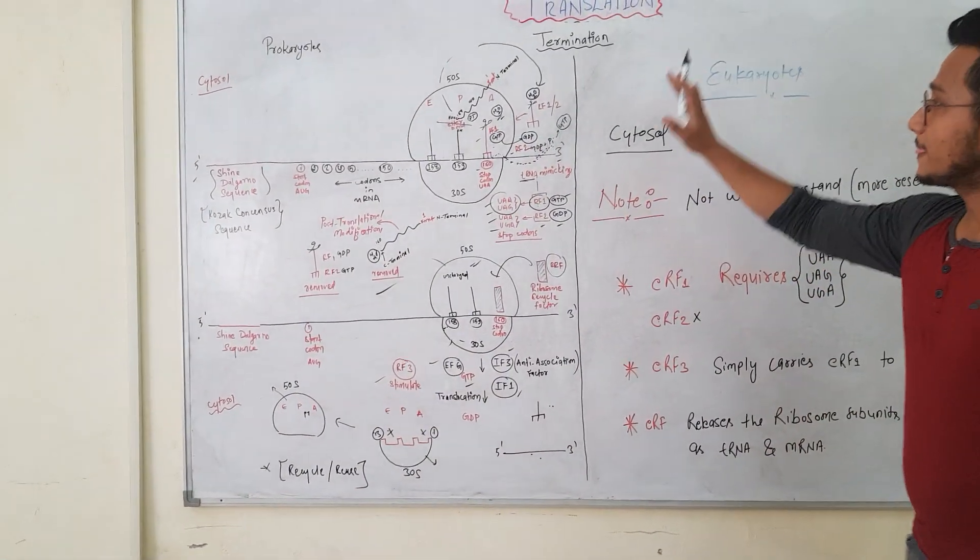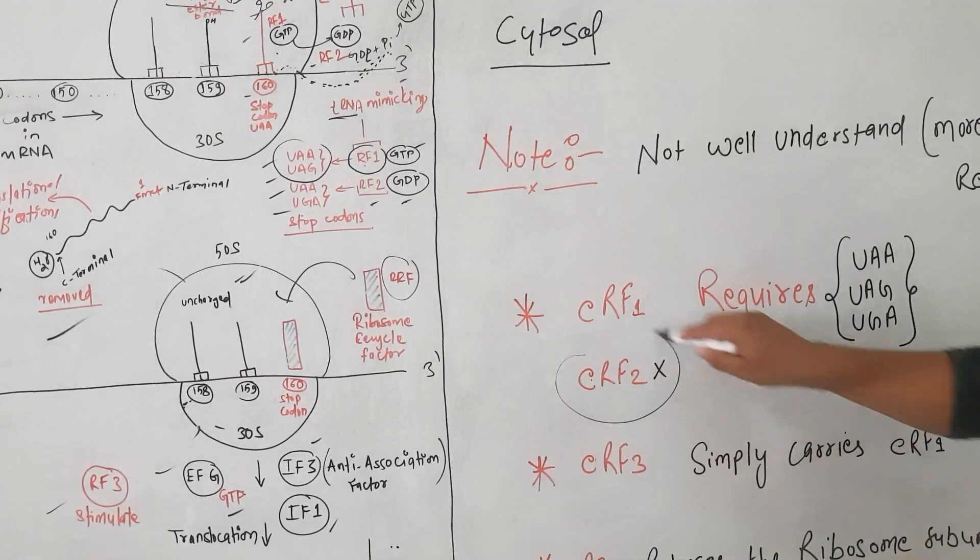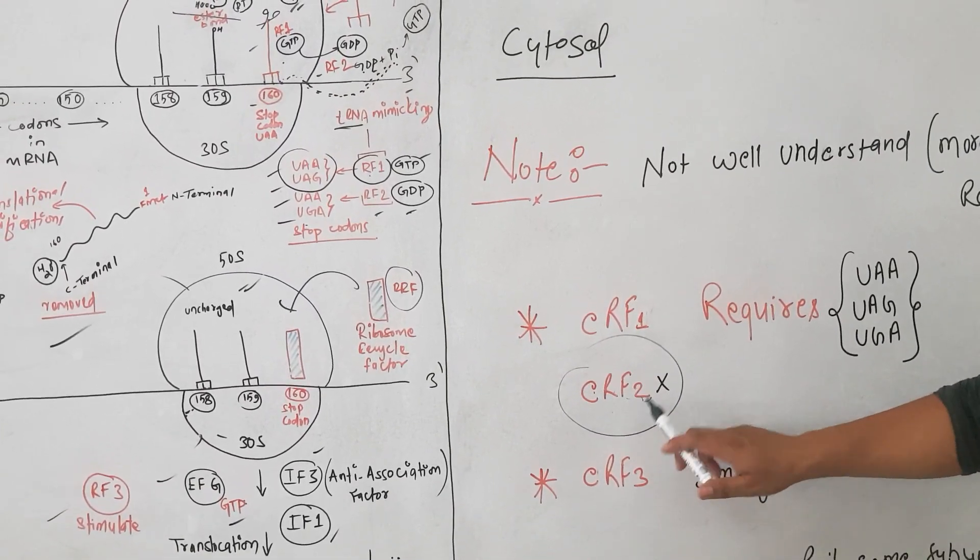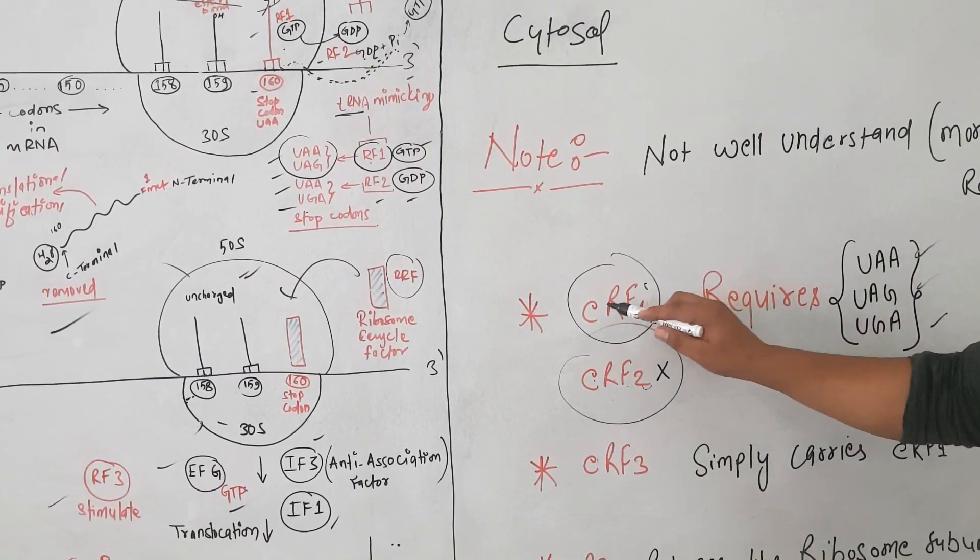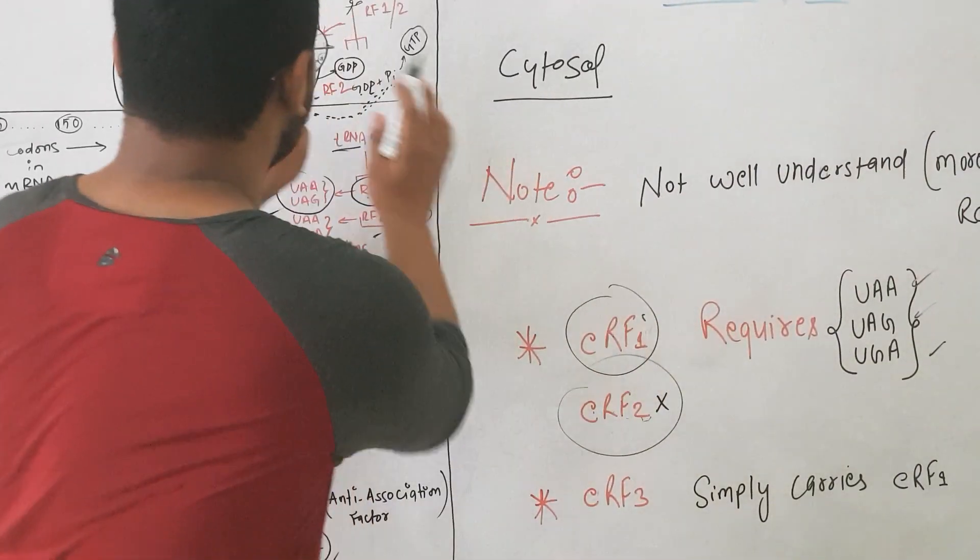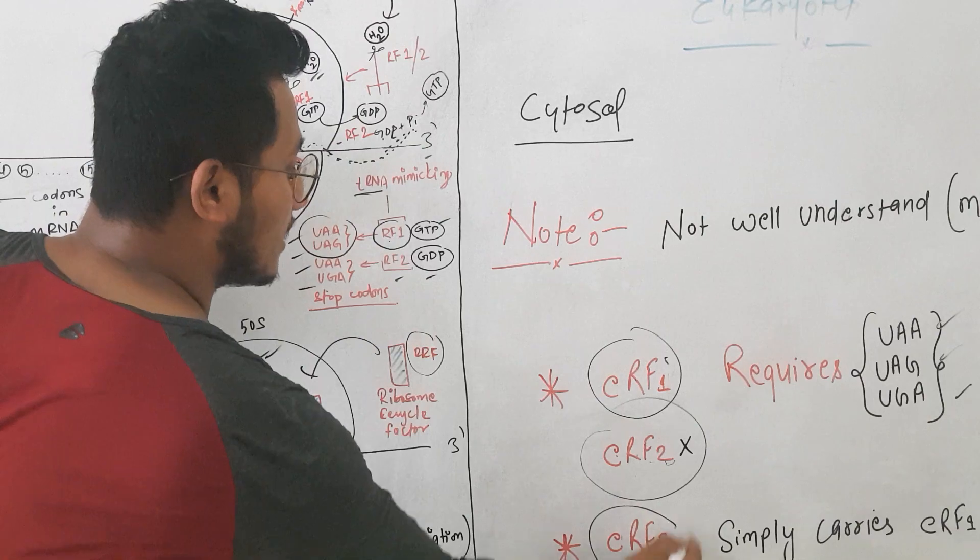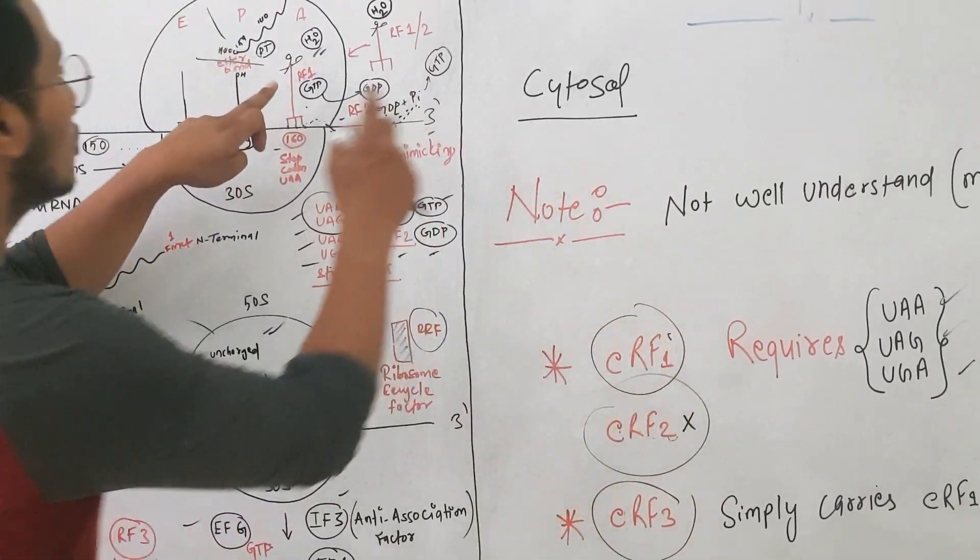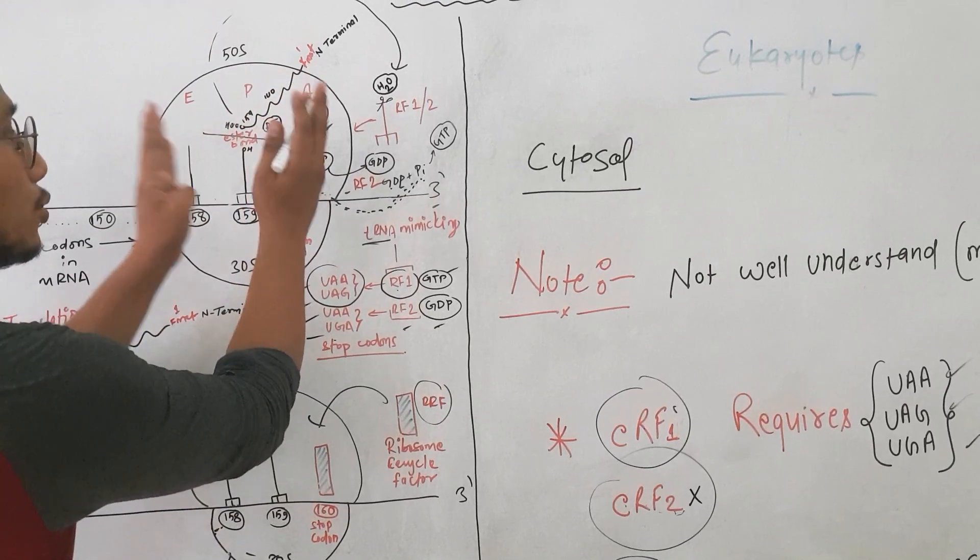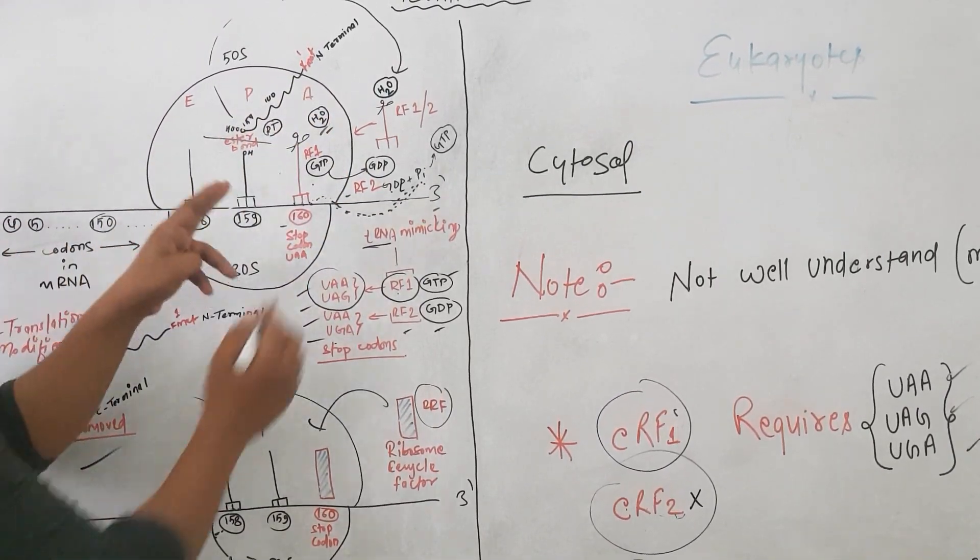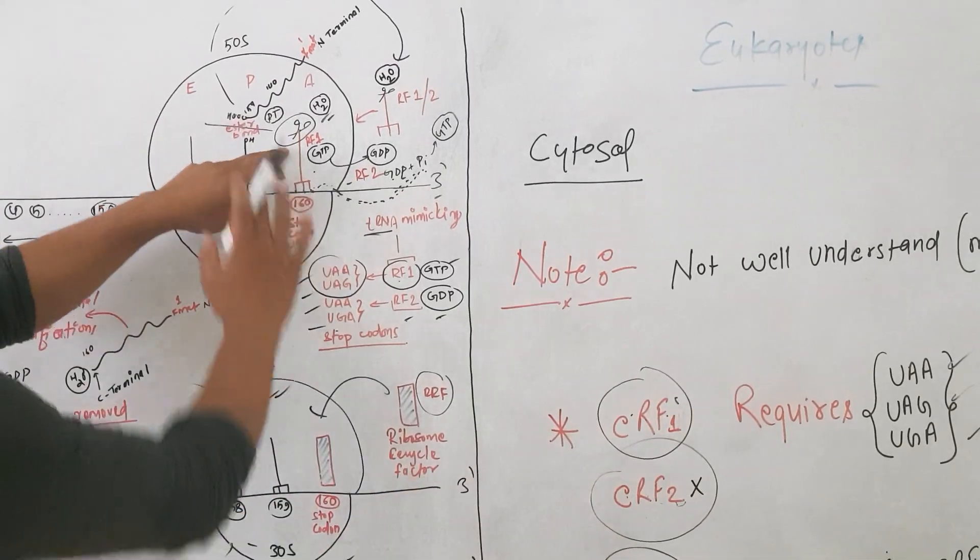Now if you look at the eukaryotes, you see almost everything is the same except for what happens is that in eukaryotes there is no RF2. There is only RF1, which recognizes all these stop codons. What happens is that this RF1 enters into the A site, and RF1 will be carried by RF3. Simply, RF3 will carry RF1 to the A site and helps to dissociate this long chain of polypeptide by the same process that occurred in prokaryotes—that is, the peptidase domain of RF1.